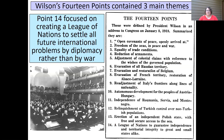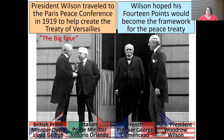The very last point — and this is the one most clearly and directly implemented as part of the peace process — is creating the League of Nations: this international organization to work through the problems and conflicts between countries before it became a situation where you had to declare war. Four people will be especially instrumental at the Paris peace process: the British Prime Minister, the Italian Prime Minister, the French Premier, and the US President. The peace conference was held at Versailles, the palace built by Louis the 14th. Wilson hoped that his 14 Points would become the framework for the treaty — he will be somewhat disappointed.